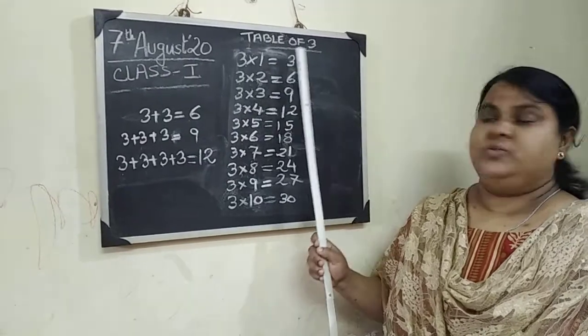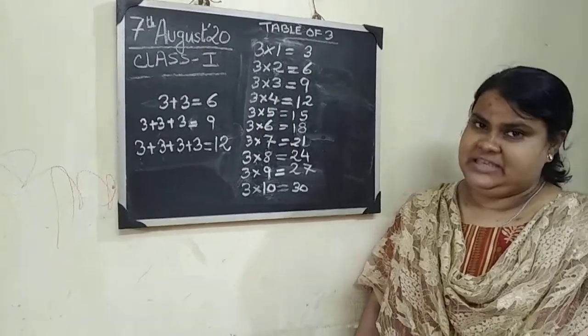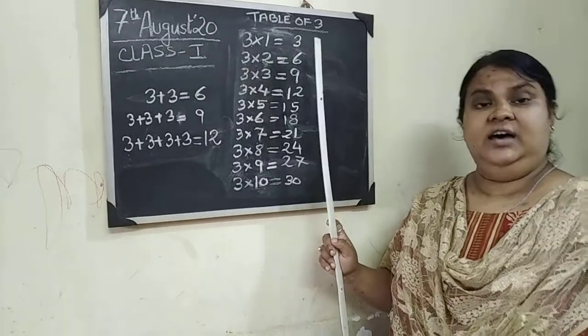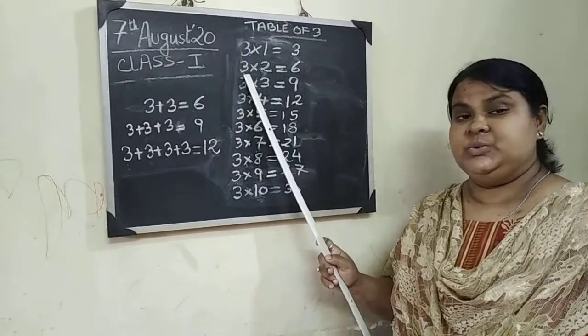Now let's revise table of 3. Please repeat after me. 3 times 1 is 3. 3 times 2 is 6.